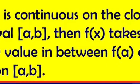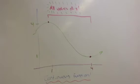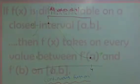Intermediate value theorem for functions. If f of x is continuous on a closed interval a to b, then f of x takes on every value between f of a and f of b on closed interval a to b.